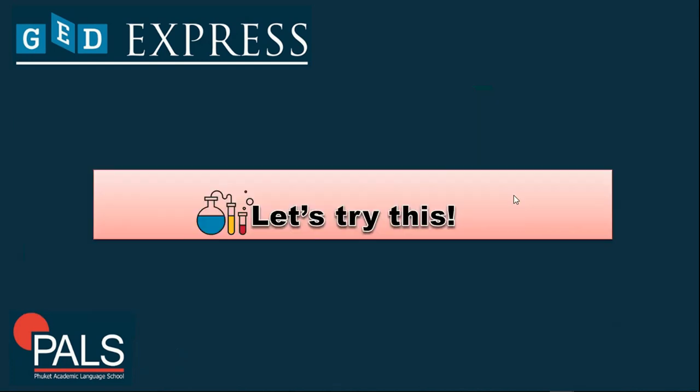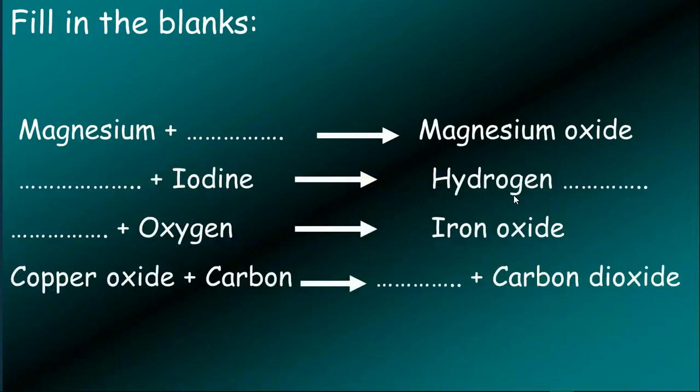Since you already have an understanding of my discussion for today, let's try these examples. Can you identify the missing element or compound on the blank? You can pause the video for a while and answer it on a separate sheet on your end. That would be magnesium plus blank will give you magnesium oxide. So that would be oxygen, precisely.